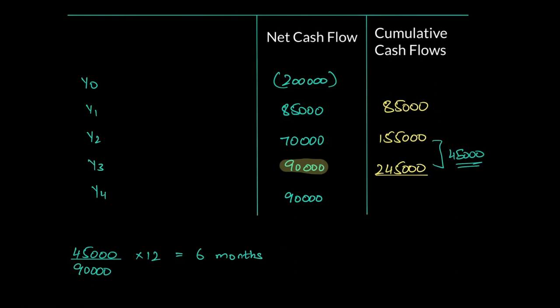We don't need the full 90,000 — we just want to know when we recovered the remaining 45,000. The total recovery for year three was 90,000. So: (45,000 / 90,000) × 12 months = 6 months. If 90,000 is recovered in 12 months, then 45,000 — exactly half — is recovered in 6 months. Therefore, the payback period is 2 years and 6 months to recover the investment of 200,000.